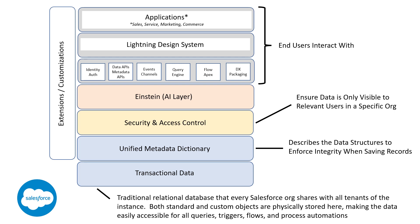Above that, you'll see the Unified Metadata Dictionary layer. This is where data integrity is enforced — for example, you must enter a number into a field designated as a numerical value type. The Security and Access Control layer ensures that data is only visible to relevant users in a specific organization. The Einstein layer is Salesforce's artificial intelligence layer. Above Einstein are the top three layers where end users will interact with Salesforce, and of course there are extensions and customizations possible with the Salesforce platform.